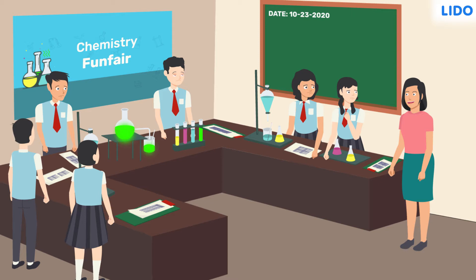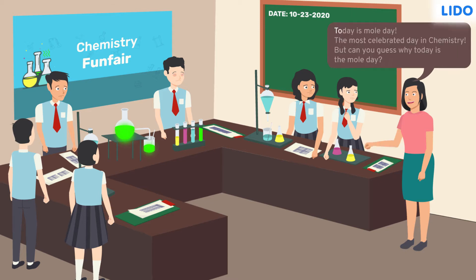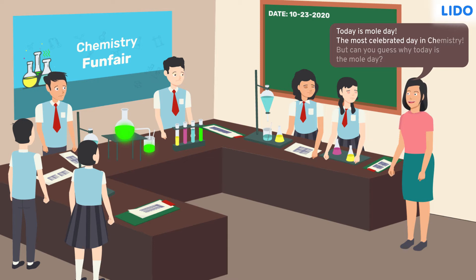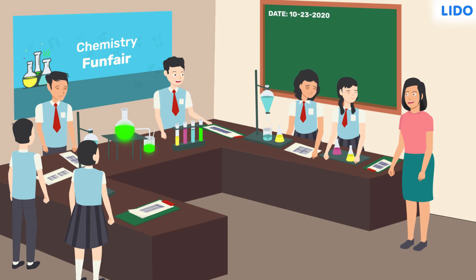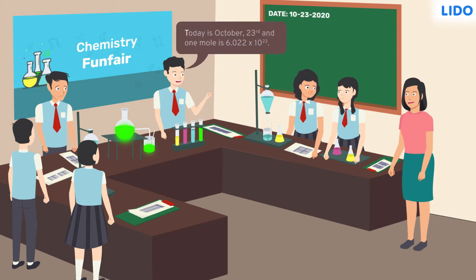Finally, Rina ma'am gives away the answer: today is Mole Day, the most celebrated day in chemistry. But can you guess why today is Mole Day? Suraj gets the hint and says, 'Today is October 23rd and 1 mole is 6.022 × 10 raised to 23.'